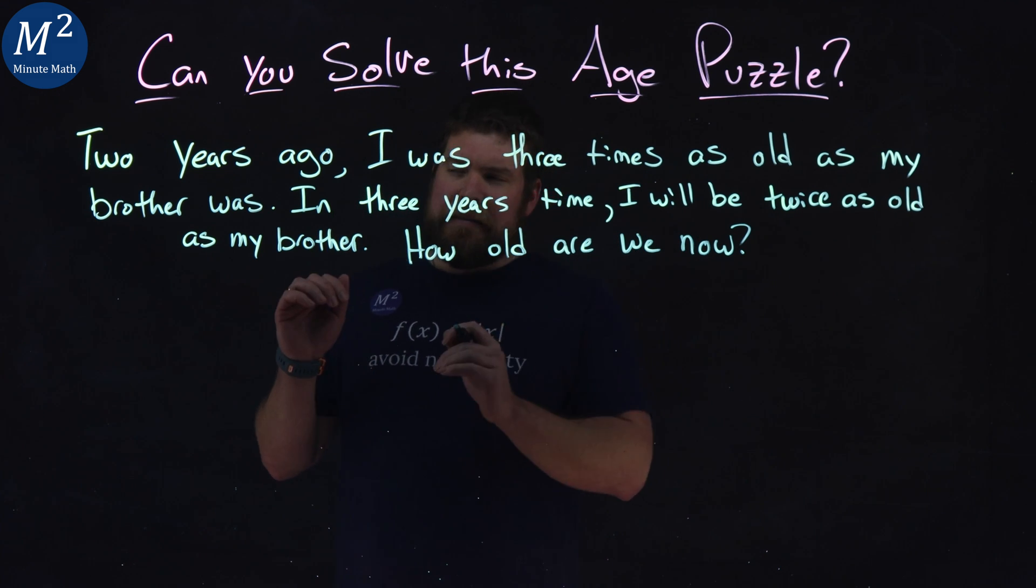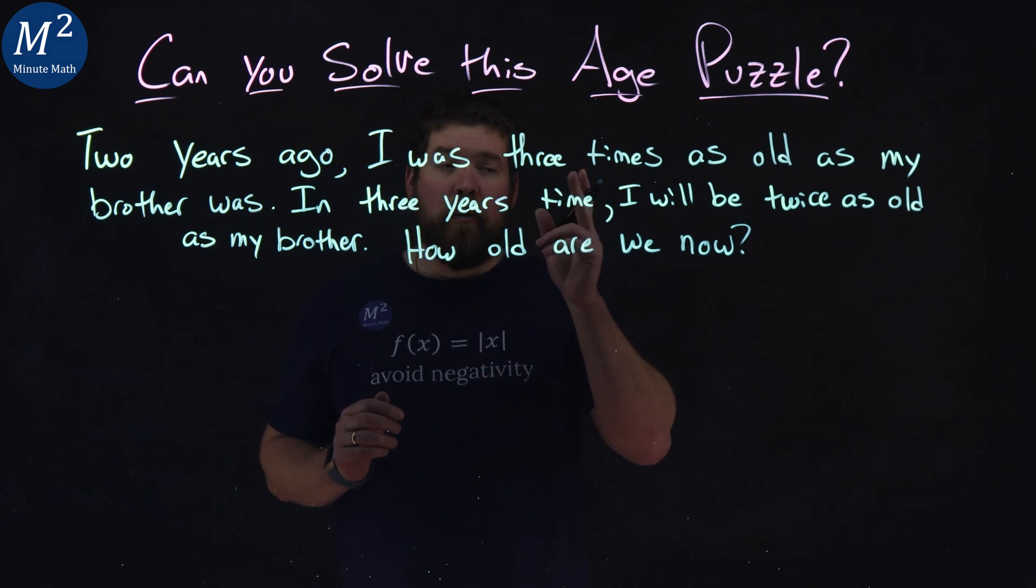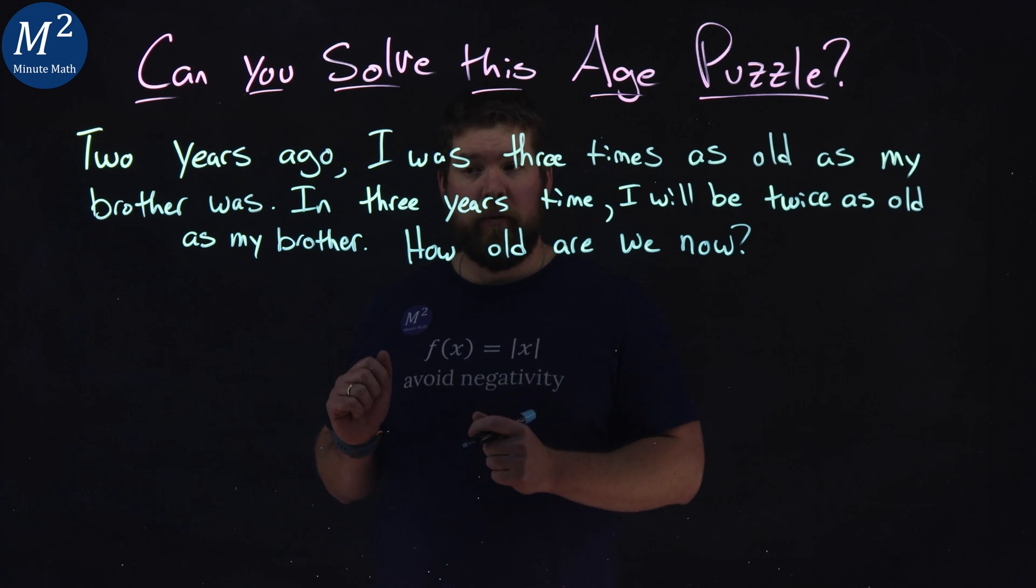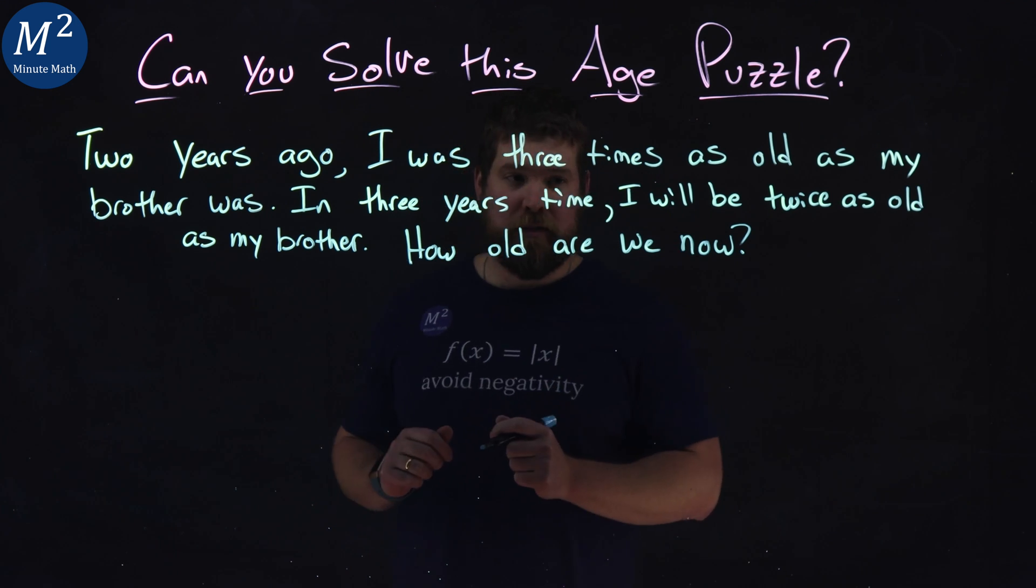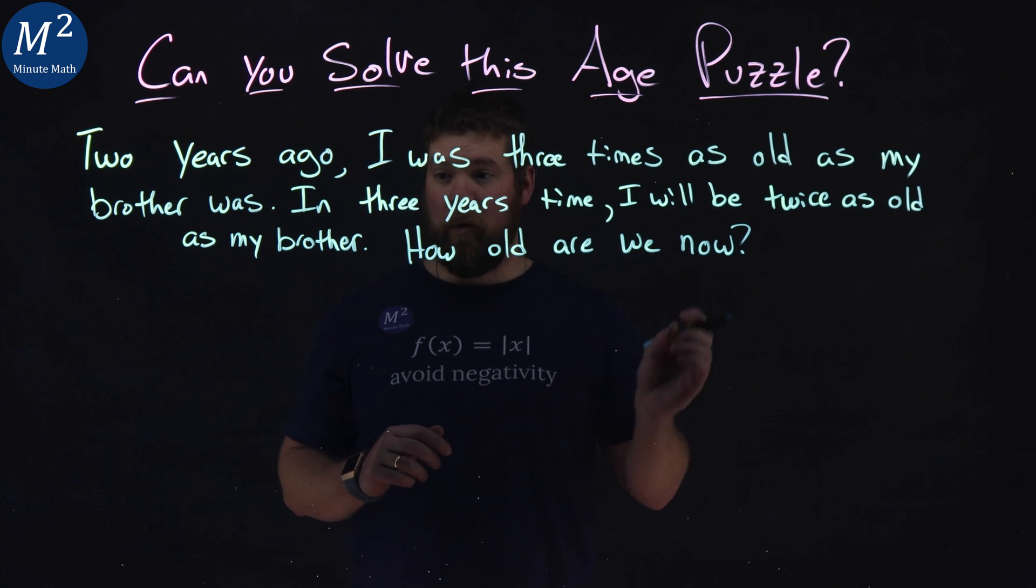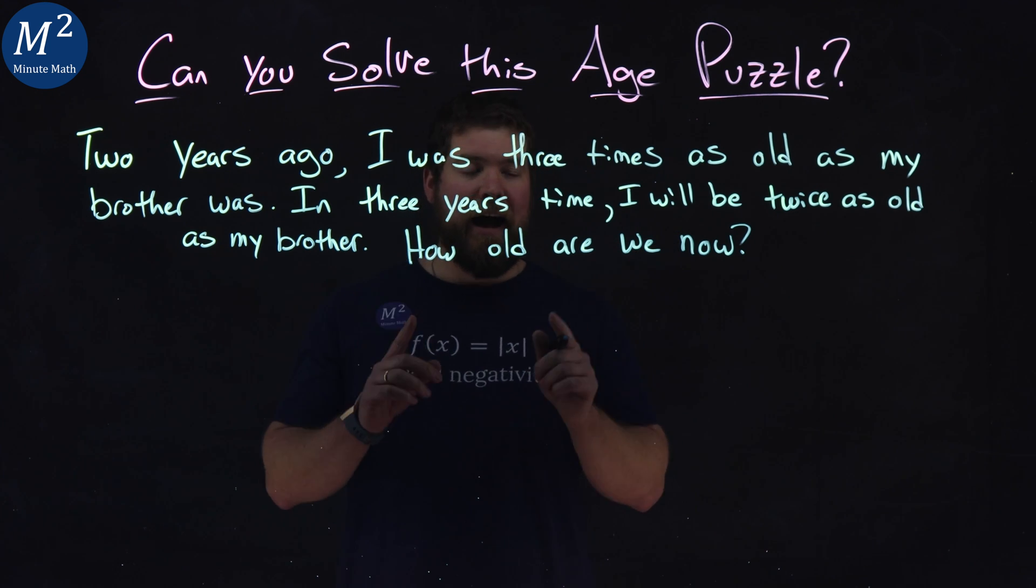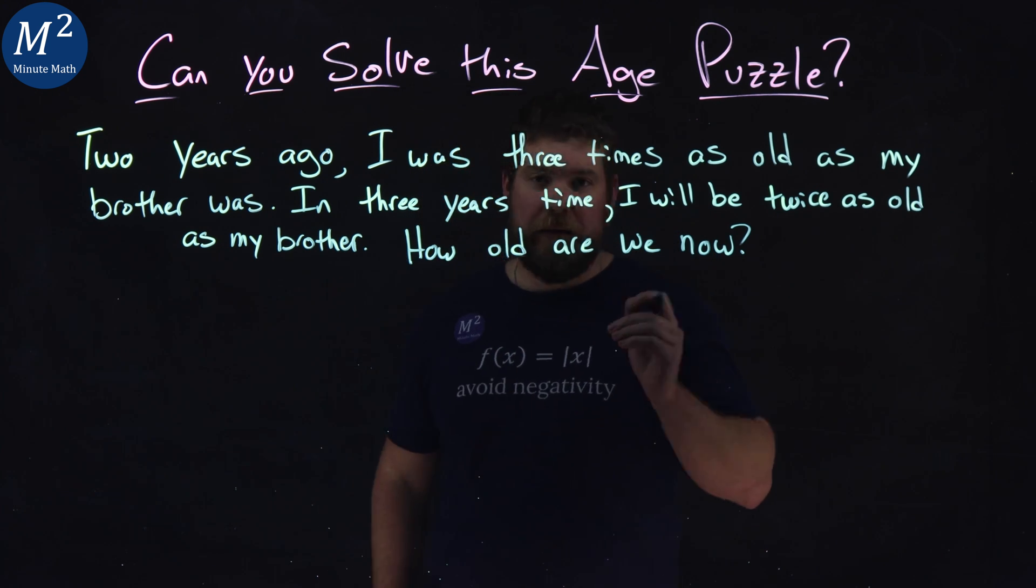The puzzle is this. Two years ago, I was three times as old as my brother was. In three years time, I will be twice as old as my brother. How old are we now?